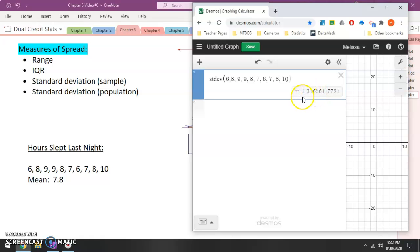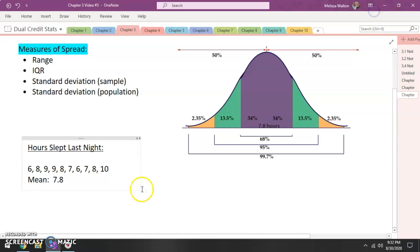So right now our standard deviation is 1.31 hours, 1.32 hours. So our standard deviation is 1.3 hours. All right, so where does this fit in with our model?